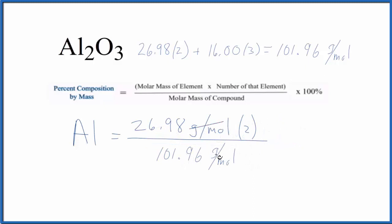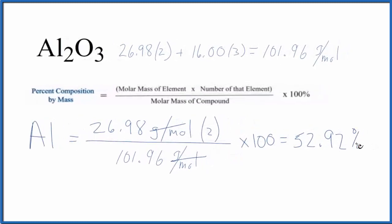When we do that, grams over moles, that cancels out. We multiply this by 100, that'll give us a percent. And we end up with 52.92% for the percent composition of the aluminum in Al₂O₃. So that's the aluminum.